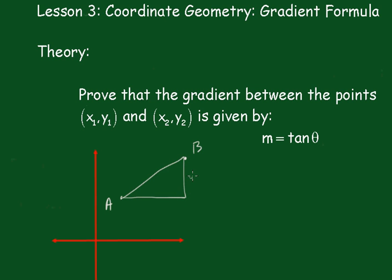And remember this one here was y₂ minus y₁, this was x₂ minus x₁, it's a right angle triangle. Now we take this angle θ. Now we can say then that the tangent of this angle is equal to the opposite over the adjacent.